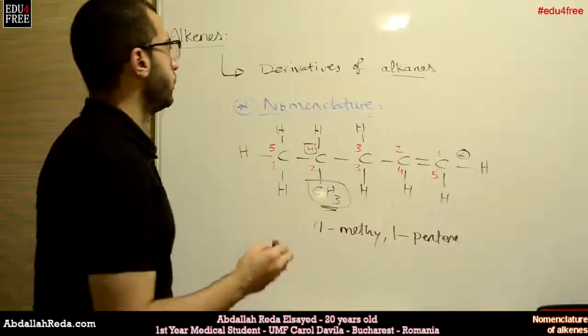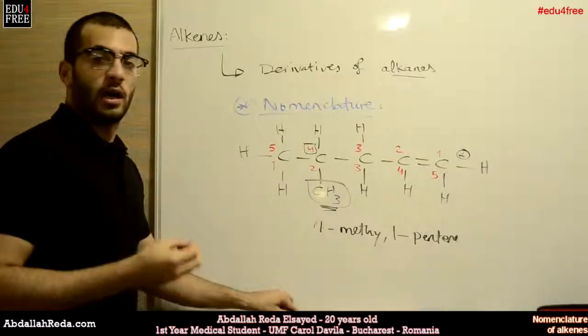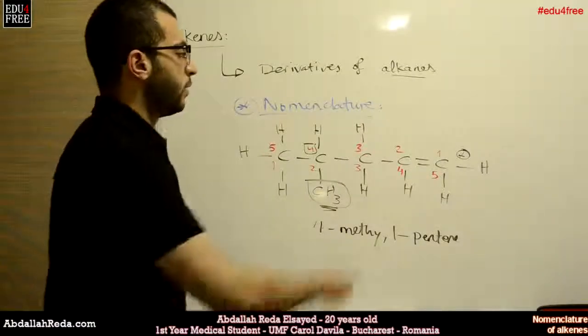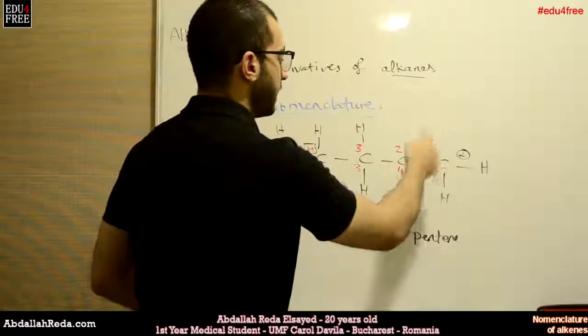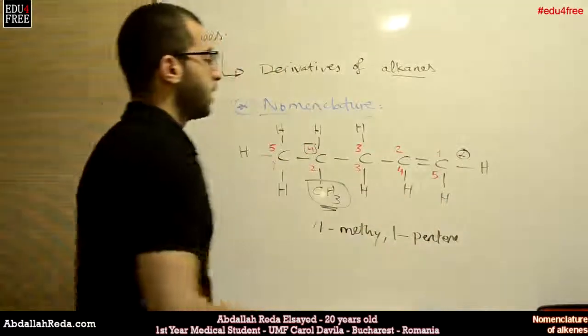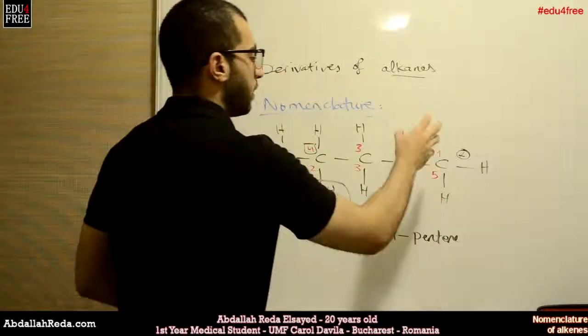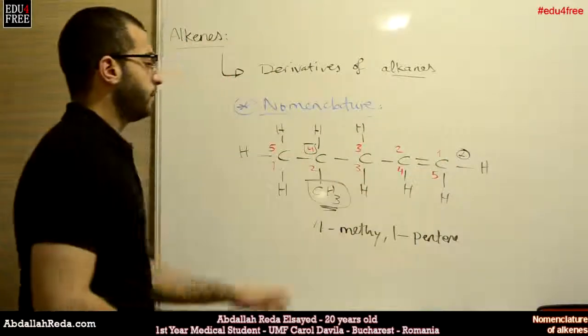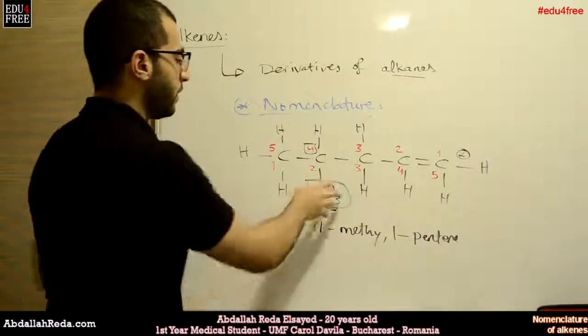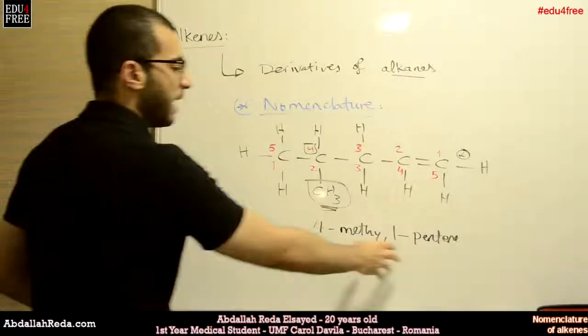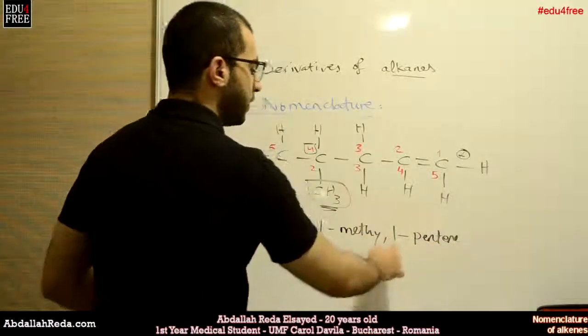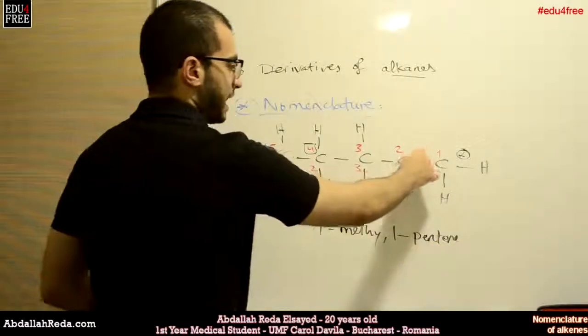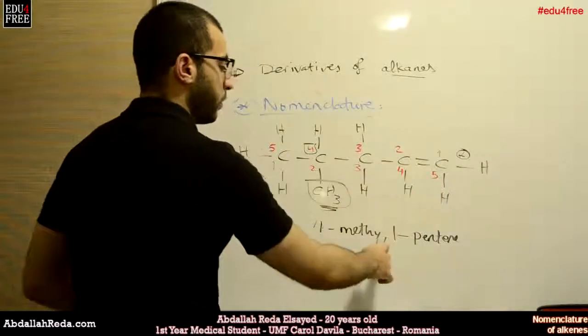So this is how you name an alkene hydrocarbon chain. You pick the numbering that gives the carbon with the double bond the least value, and you put the number of the substituents. Before the name of the alkene, you put the number of the carbon that has the double bond. So here it's 1, we put 1-pentene.